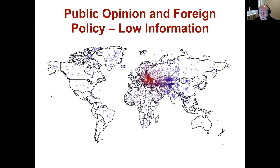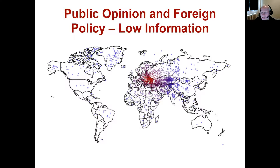We're not in class, so I can't ask you to point to it on a map, but certainly many of you might not get it exactly correct. At least, if it's a conflict between Russia and Ukraine, knowing that Ukraine borders Russia would be some important information — knowing that Ukraine's in Europe. So putting a dot somewhere in Europe near the boundary with Russia would be a reasonable guess.